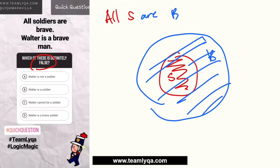Sabi, Walter is a brave man. So ibig sabihin si Walter, brave siya. Ibig sabihin nasa loob siya ng bilog na B, pwede siya dito. Kung dito siya, it will make him brave pero hindi siya soldier. Pero pwede rin siya dito kasi ang sabi lang naman, brave siya. So hindi tayo sure kung siya ba ay soldier o hindi, pero definitely brave siya.